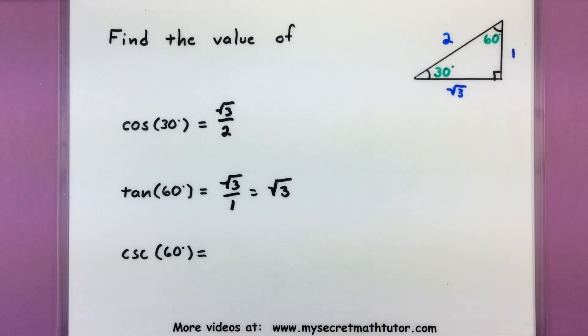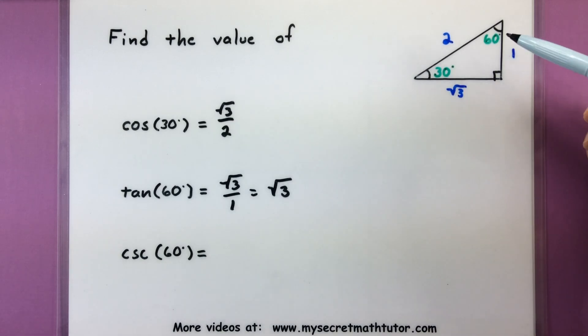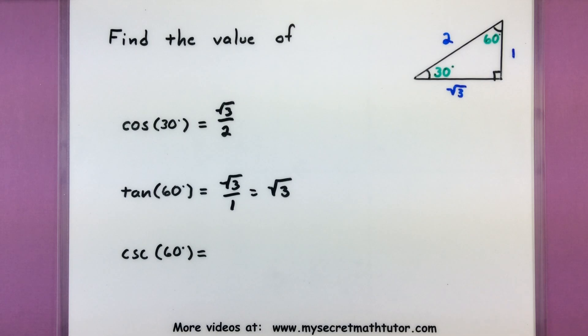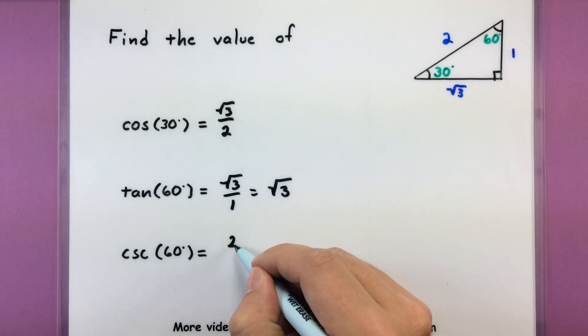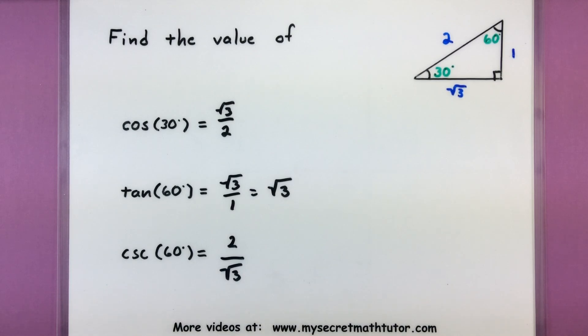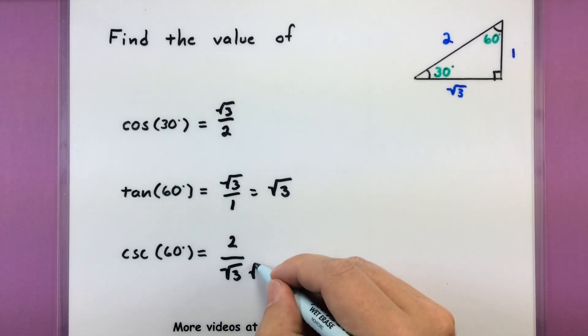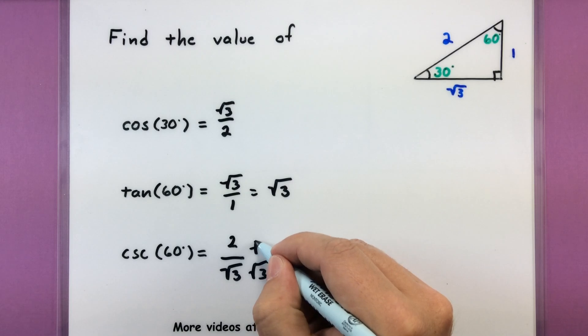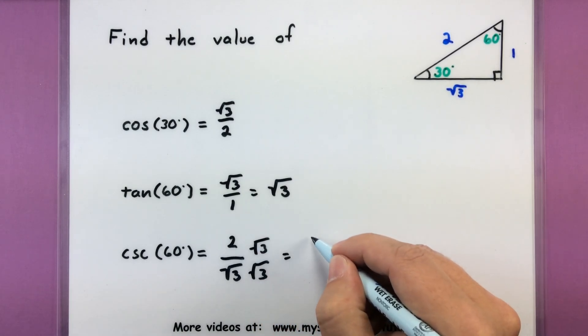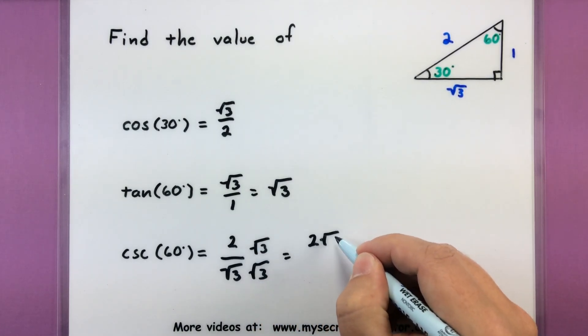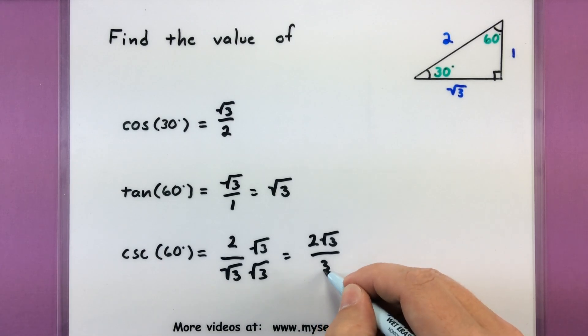And lastly, let's go ahead and do cosecant of 60 degrees. Cosecant would be our hypotenuse all over the opposite. So hypotenuse all over opposite. Just to make this look a little bit better, let's go ahead and rationalize the denominator. We'll multiply the top and bottom by square root of 3. So we have 2 times the square root of 3 all over 3.